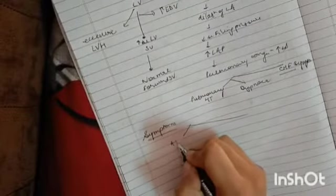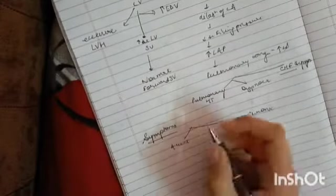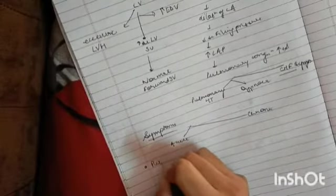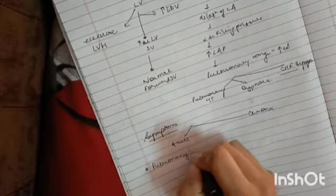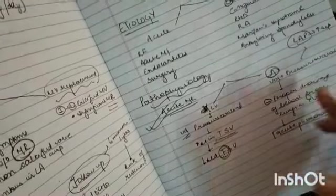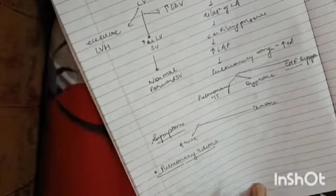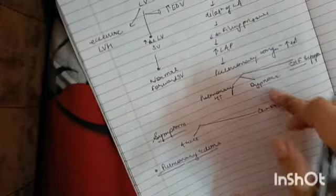In symptoms, we will divide them into two categories: acute and chronic. In acute, as I mentioned, we will see pulmonary edema. Why is pulmonary edema happening? Because there is volume and pressure overload which inhibits the proper drainage of blood from the lungs to the pulmonary veins.